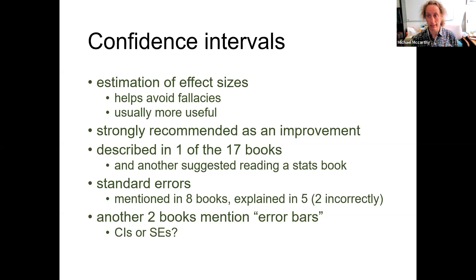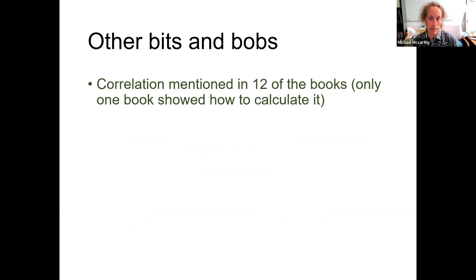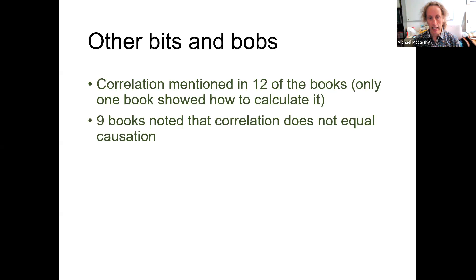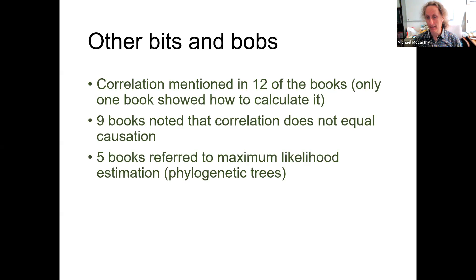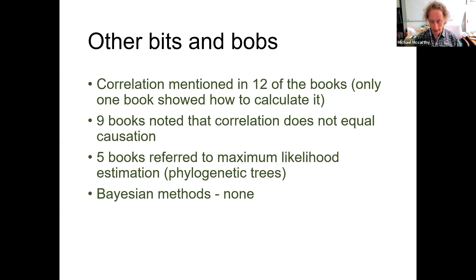In terms of other statistical content: correlation was mentioned in 12 books, but only one showed how to calculate it. Nine noted that correlation does not equal causation. Five books referred to maximum likelihood estimation, but only in the context of generating phylogenetic trees. Bayesian methods weren't mentioned in any of them.